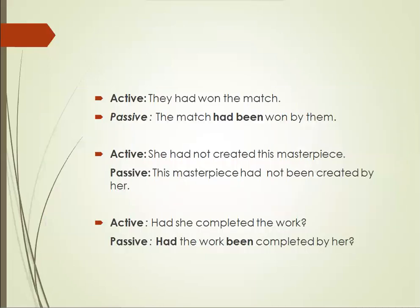Examples: 'They had won the match.' Here 'they' is the subject, 'had' is the auxiliary, 'won' is the verb, 'the match' is the object. The passive is: 'The match had been won by them.' In negative: 'She had not created this masterpiece' → 'This masterpiece had not been created by her.' Interrogative: 'Had she completed the work?' → 'Had the work been completed by her?'